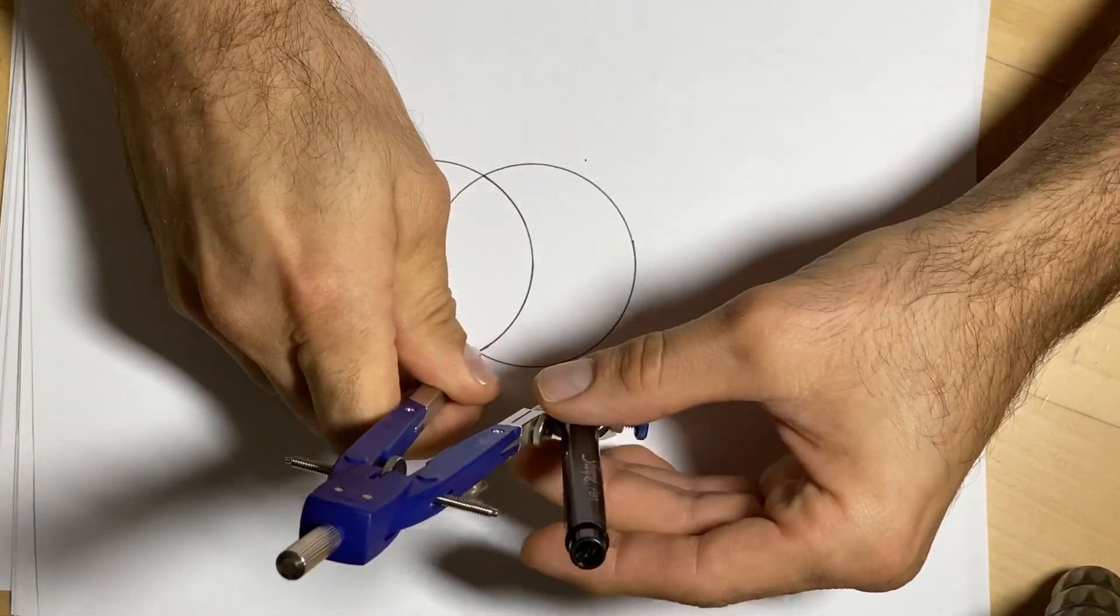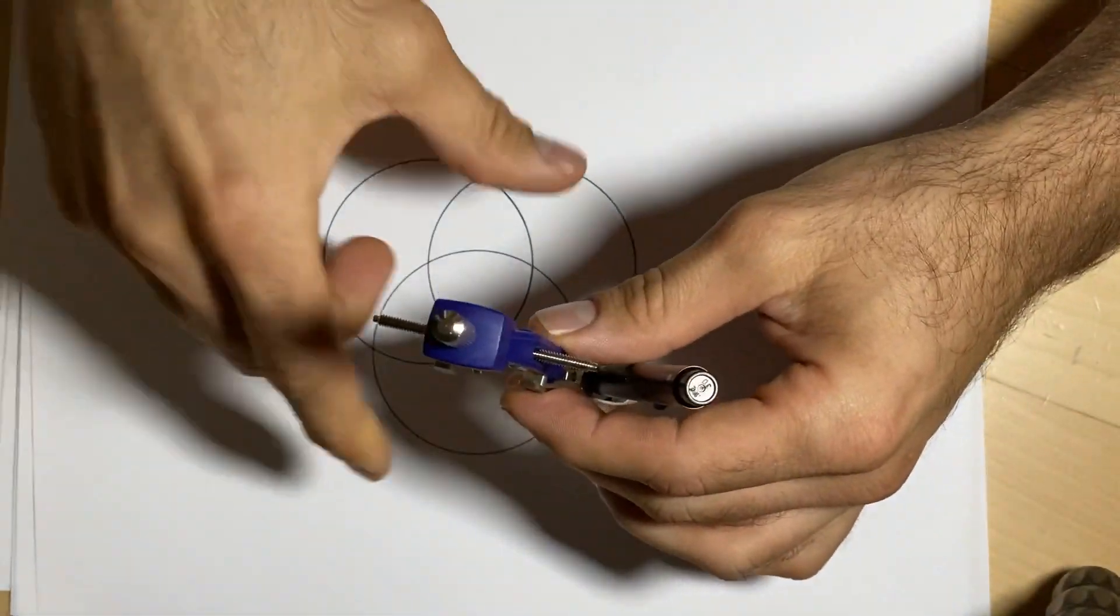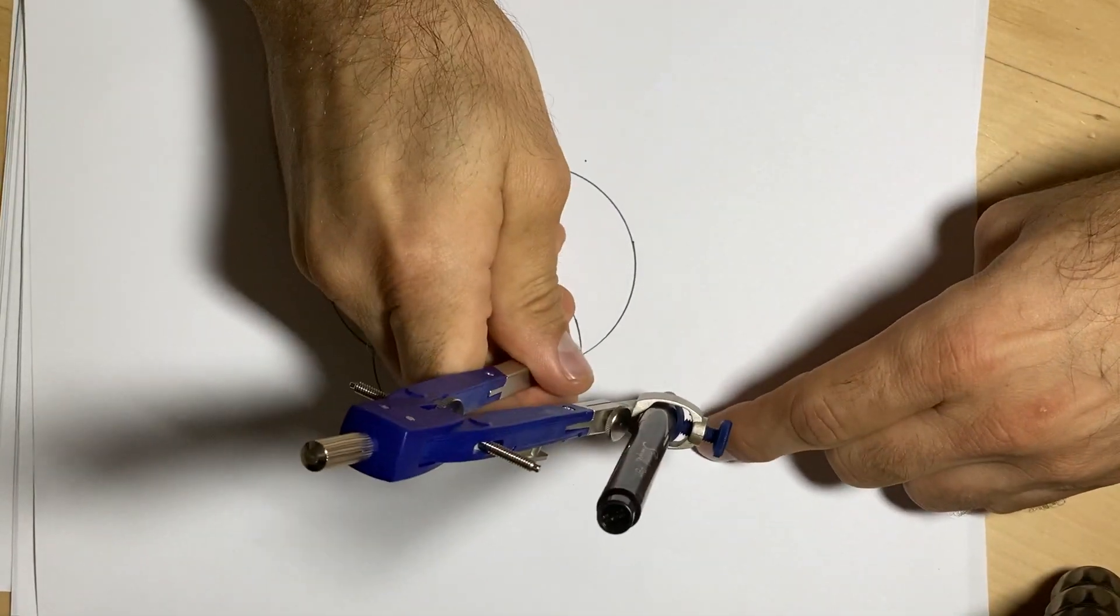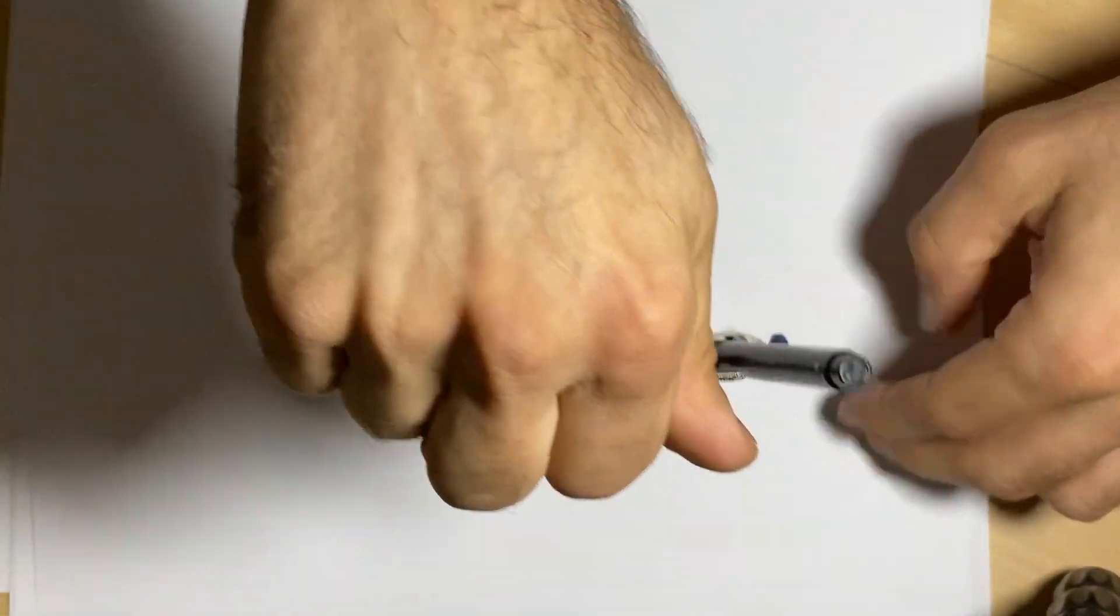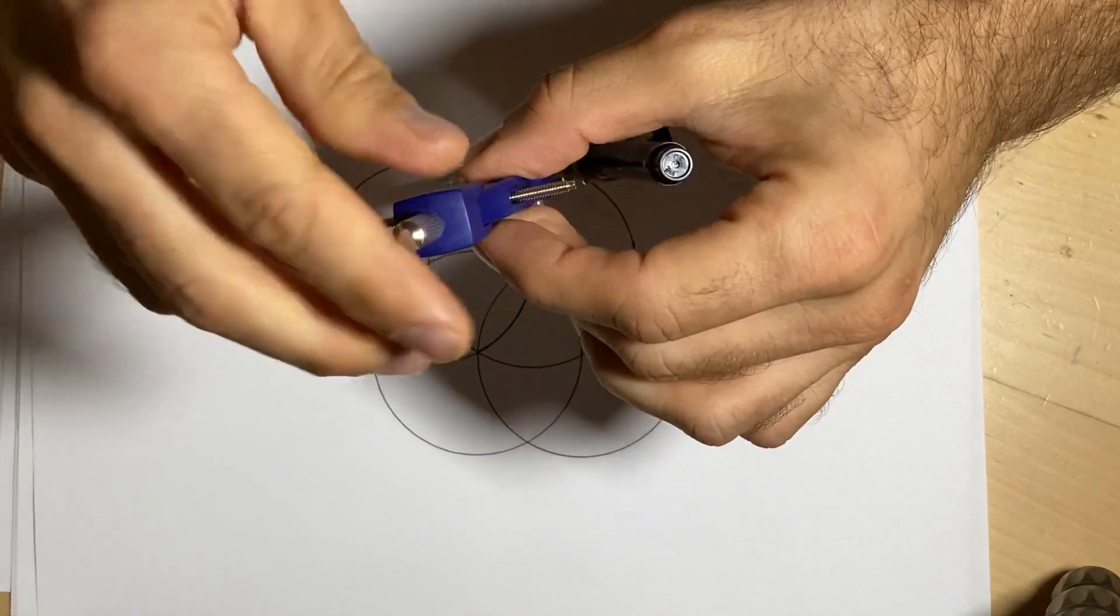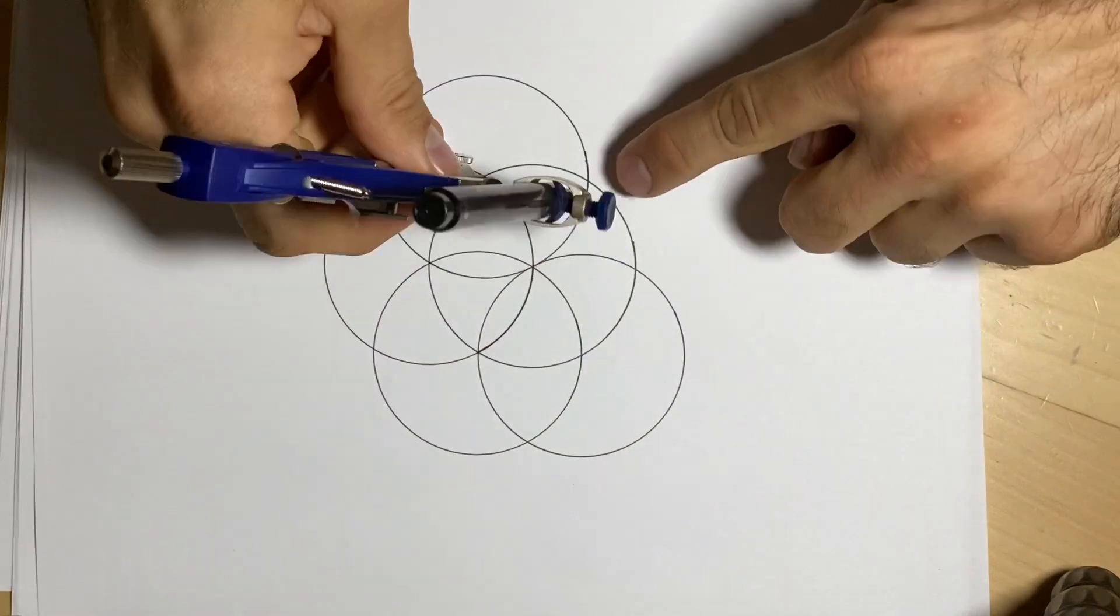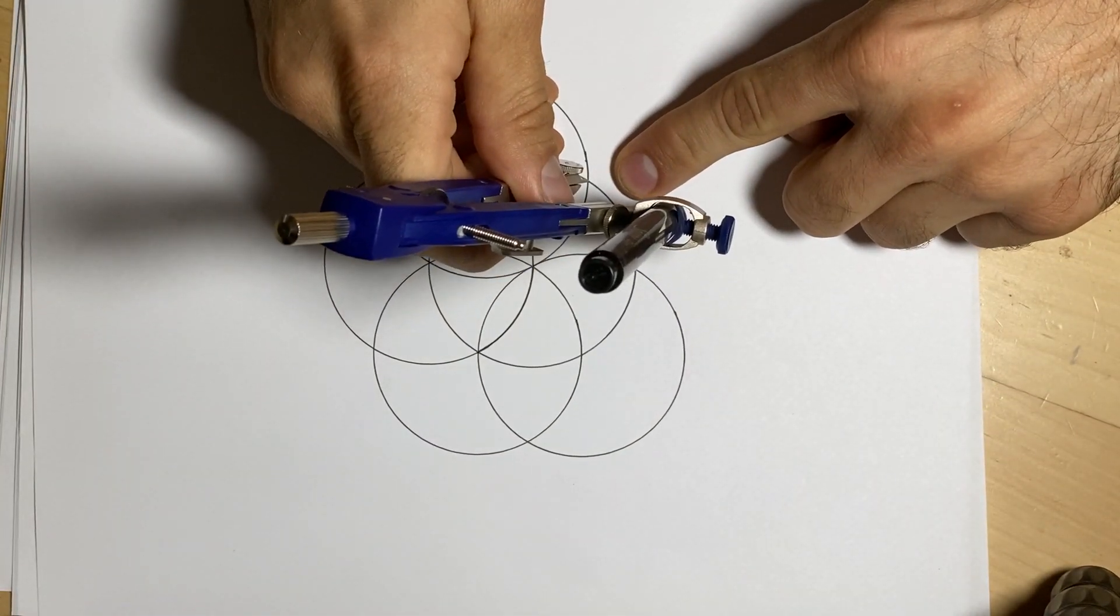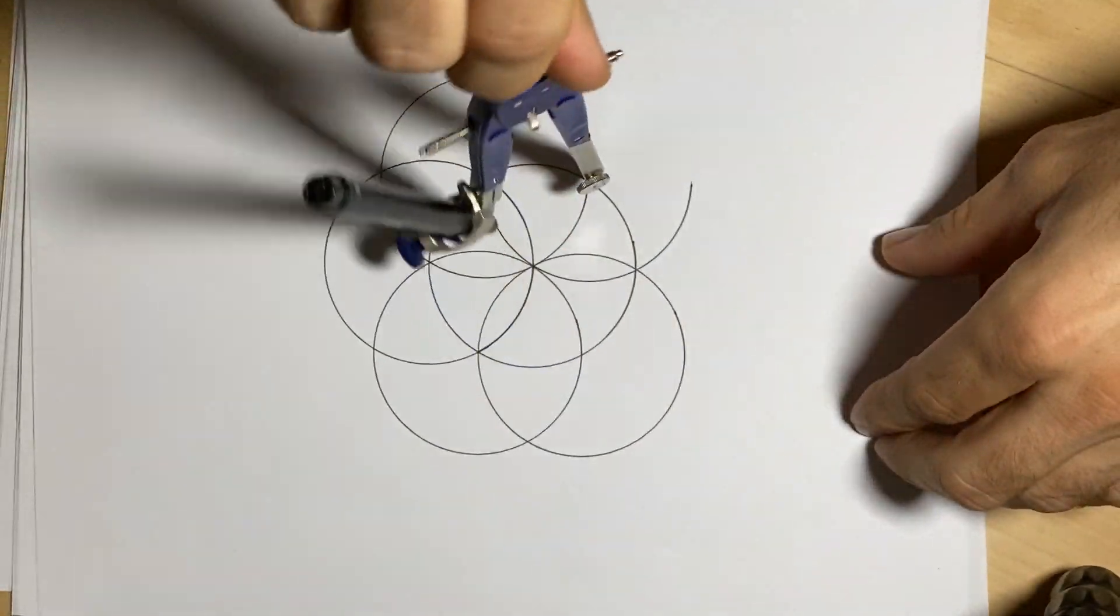You go to the second circle, then there'll be another spot you can place your compass there. If we want, we could go back down. We're simply putting the point of our compass where the two circles intersect.